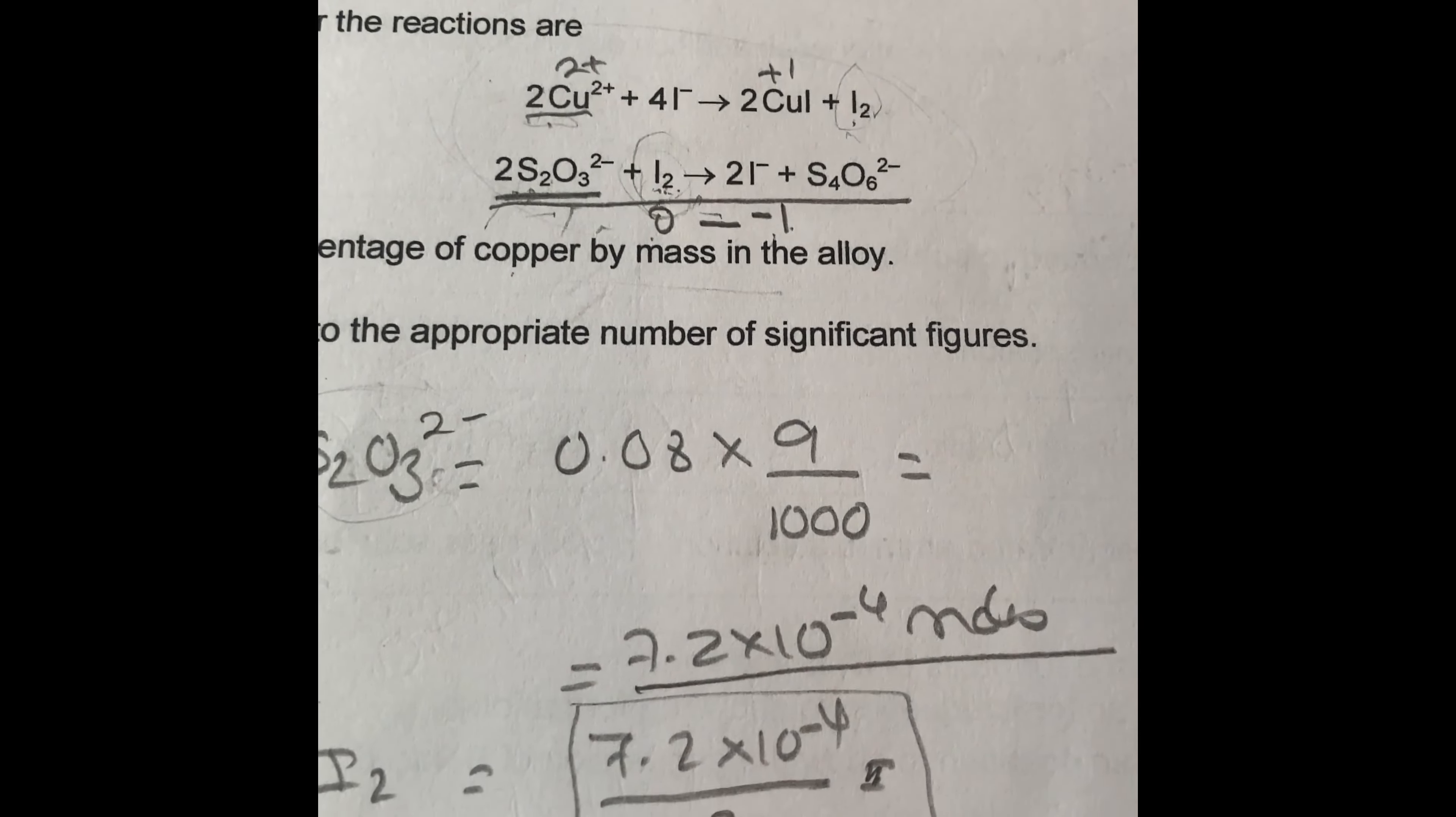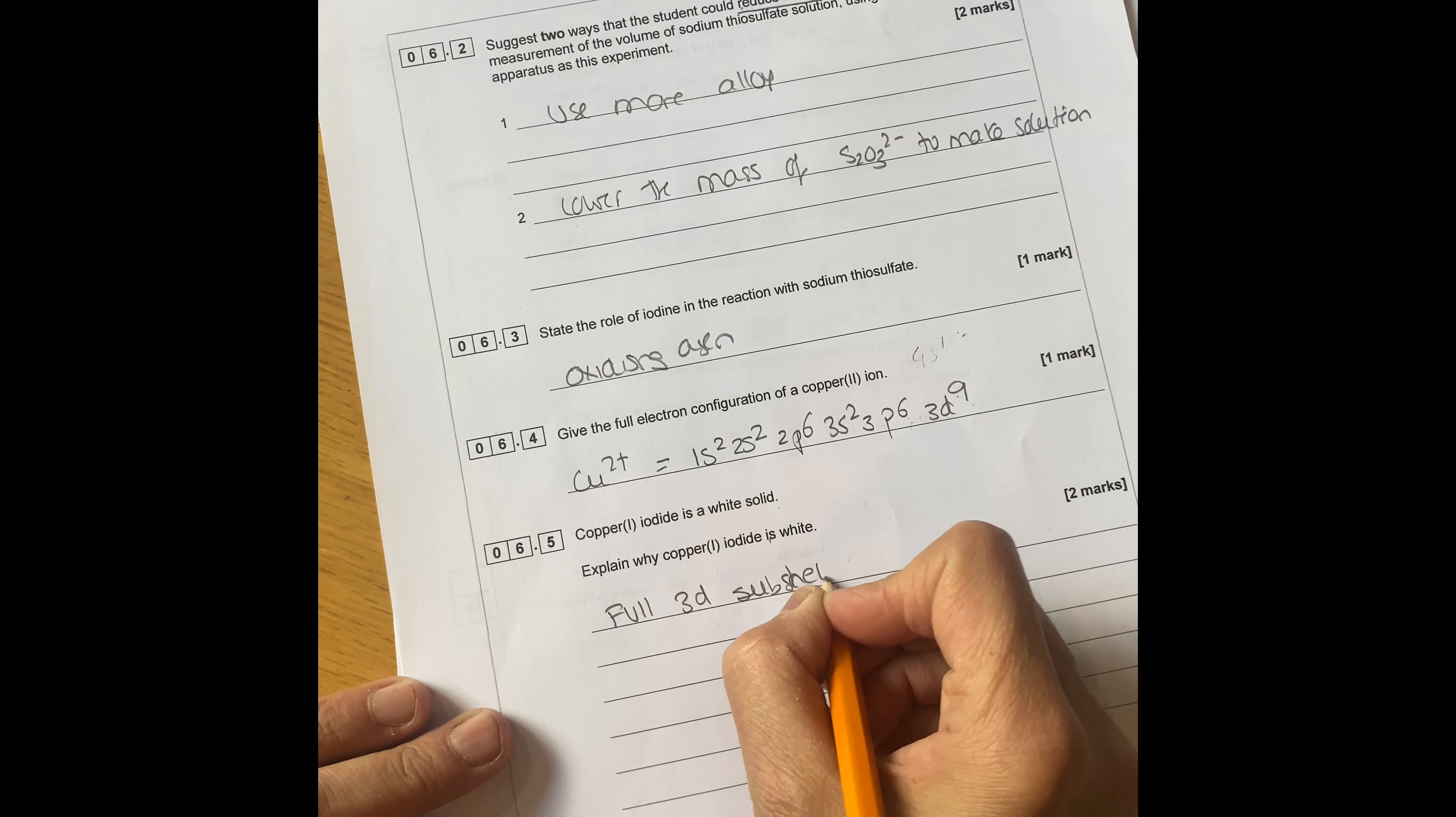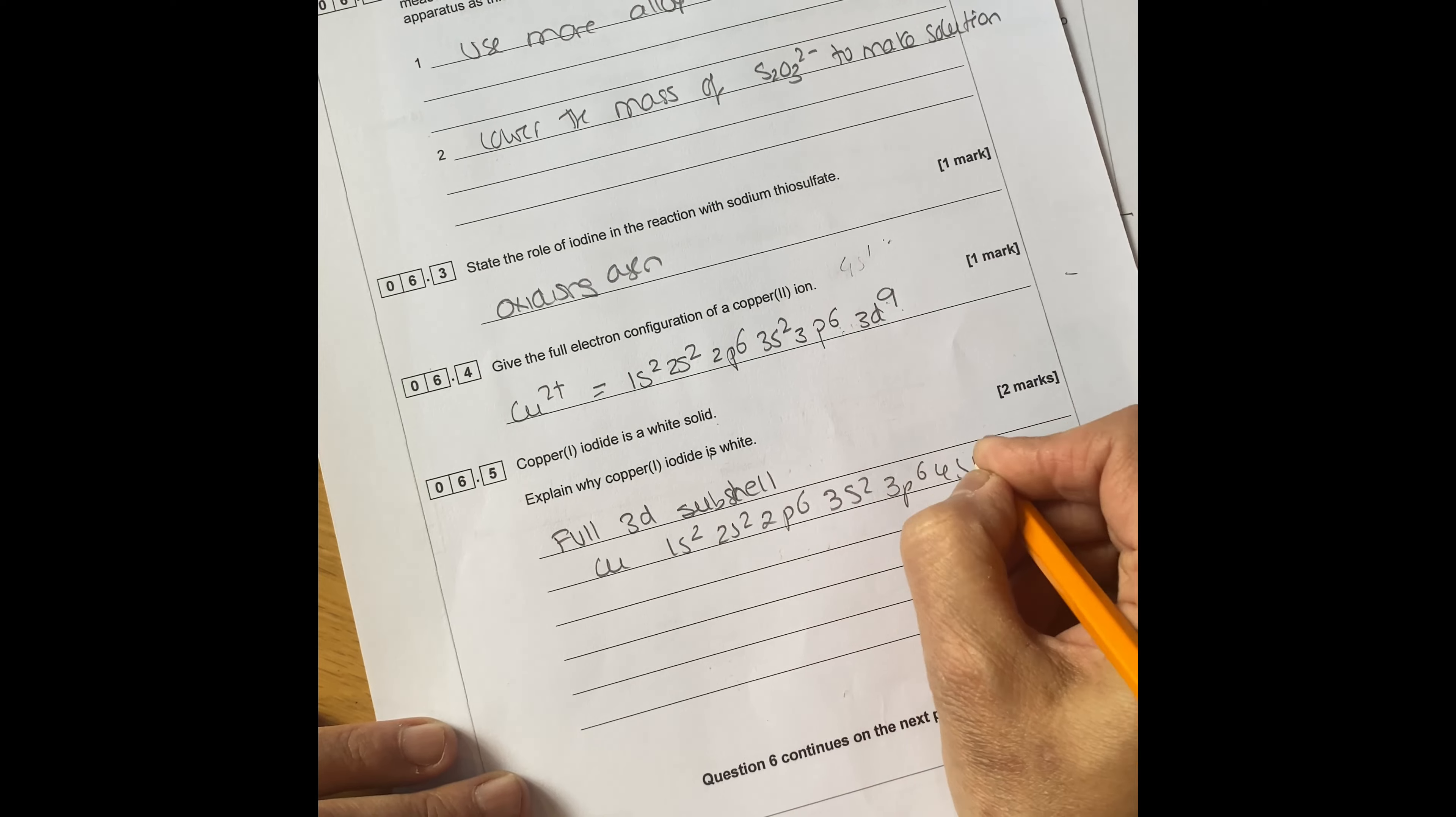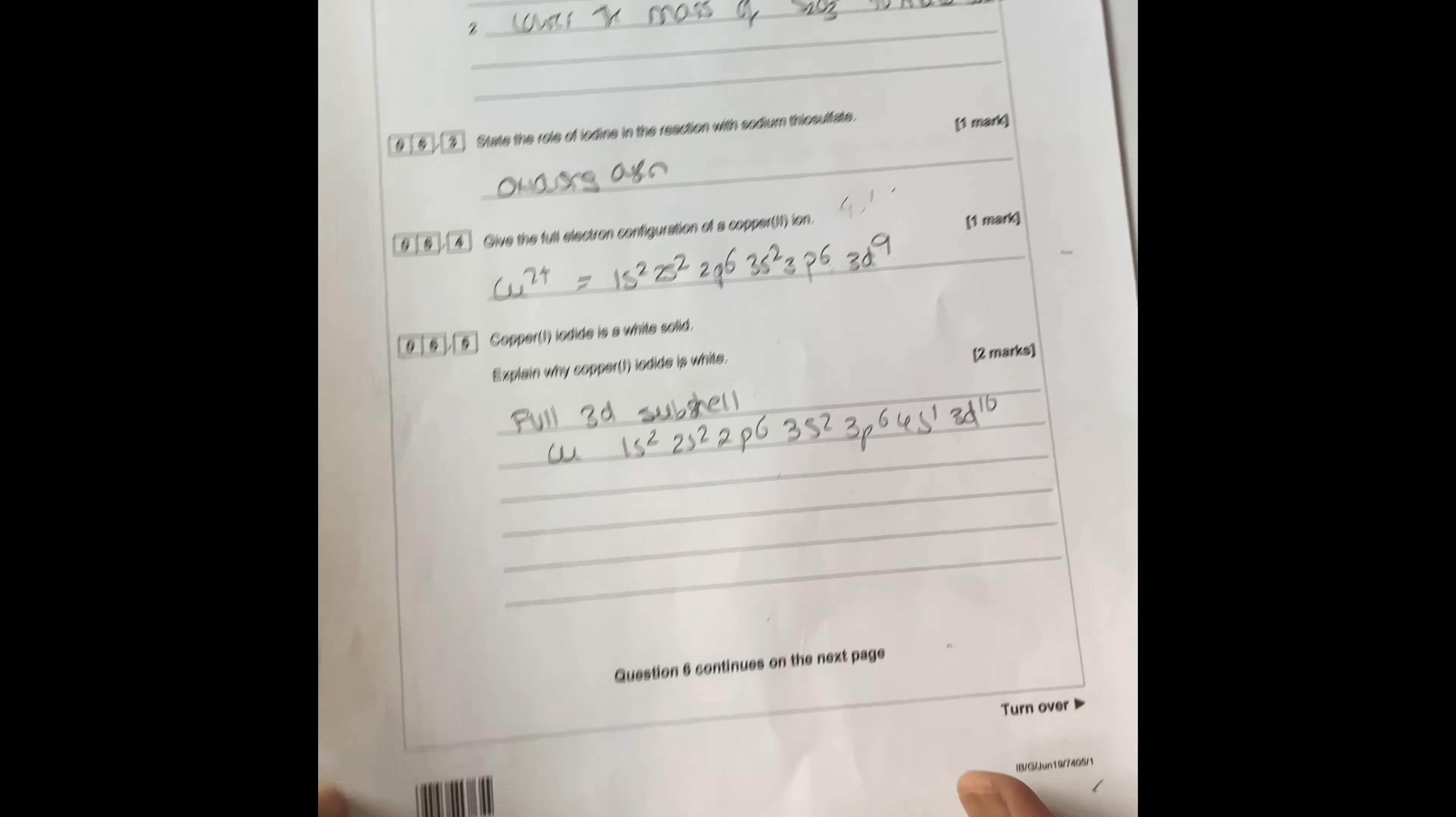What I meant to say is that, it's a white solid because it's got a full 3d sub shell. So if you look at the copper itself, it's going to be 1s2, 2s2, 2p6, 3s2, 3p6, 4s1 and 3d10. So it hasn't got incomplete d sub shell. So it can't form colors. It can't form color compounds.